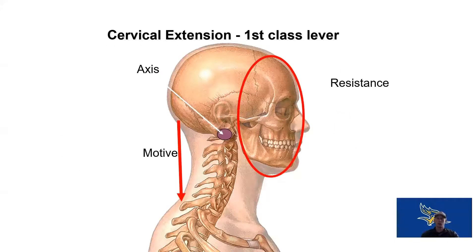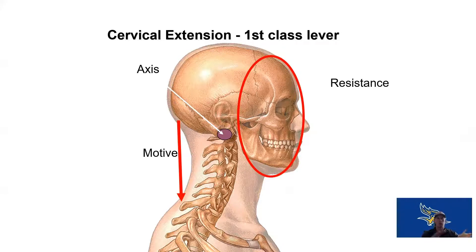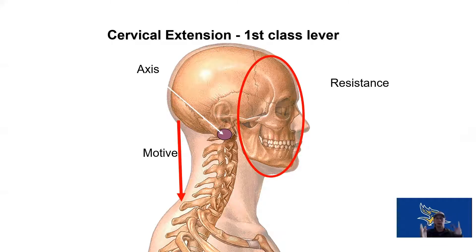We also see first class levers with cervical extension. The neck extensor muscles cause a force on one side of the cervical spine axis, and gravity pulling our face downward is the resistive force on the other side. That motive force on one side of the axis causes the face to move up or relaxes to allow it to move down — we get motion on either side depending on the force applied.